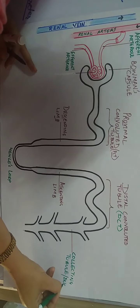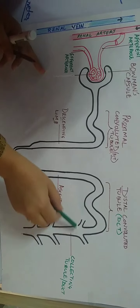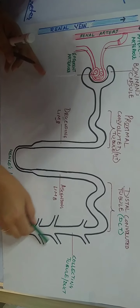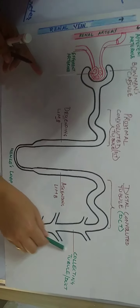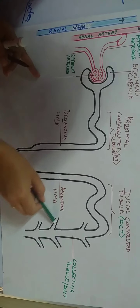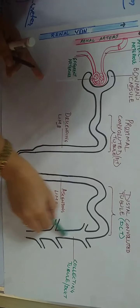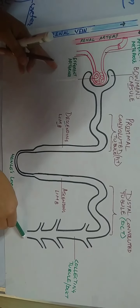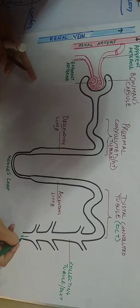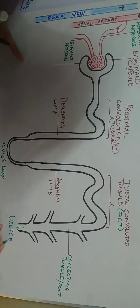Now I will explain the role of the collecting duct. As you can see, there are some branches not drawn — these are the continuation parts of other nephrons. Many nephrons are connected together to one collecting duct, which then drains all the waste into the ureter.